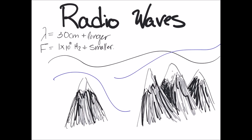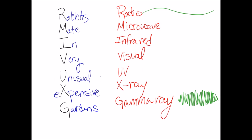Radio waves have a wavelength between 30 centimeters and longer. They have a frequency 1 x 10 to the 9th hertz and shorter. Radio waves are super long compared to the other waves. They are also fairly low energy. Radio waves are utilized for AM and FM radio as well as television. Radio waves can easily go through you without hurting you and they can easily travel over mountains. Rabbits mate in very unusual expensive gardens: Radio waves, microwaves, infrared waves, visible light waves, ultraviolet waves, x-rays, and gamma rays.